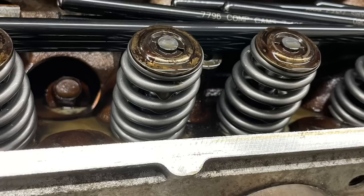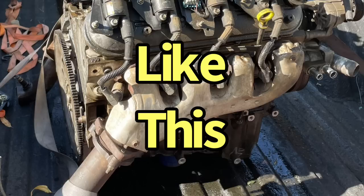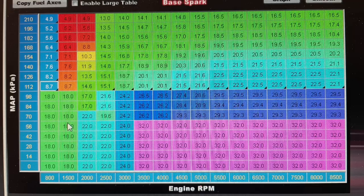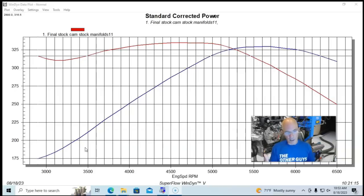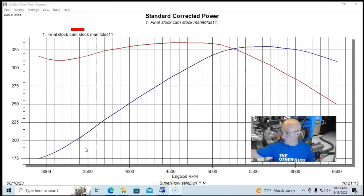But otherwise, it had the stock throttle body truck intake manifold. We had bigger injectors in it only because we were going to be adding other things later on. When you're dialing in the air fuel and timing, that doesn't matter. Stock 706 heads, it had a valve spring upgrade for later on a camshaft. And other than the pistons, stock rods, stock crank, stock block. We ran this thing with stock exhaust manifolds as well.